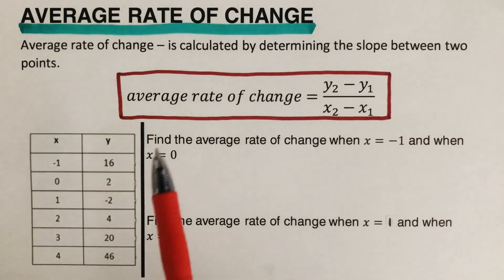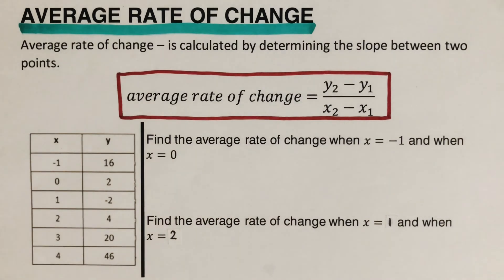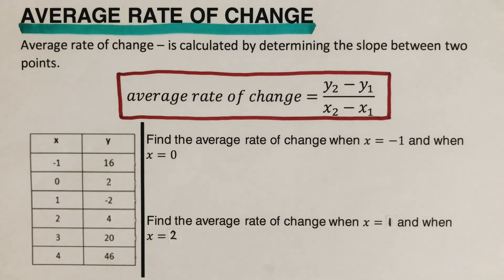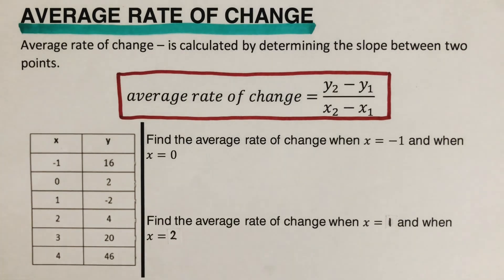The reason why this is called average rate of change is because the function we will have is not going to be a straight line. A straight line will have a fixed slope — always a fixed rate of change. But if it's not a straight line, like a parabola or quadratic function, then the slope may not be the same as we go around the shape of the graph. So that means we take only the average rate of change.